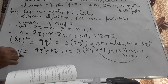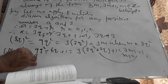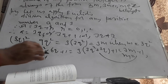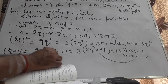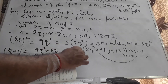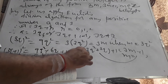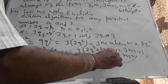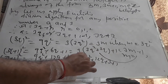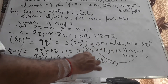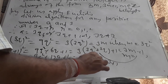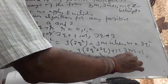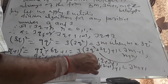(3Q+2)² equals 9Q²+12Q+4, which equals 9Q²+12Q+3+1, which is 3(3Q²+4Q+1)+1, which is of the form 3m+1, where m equals 3Q²+4Q+1.